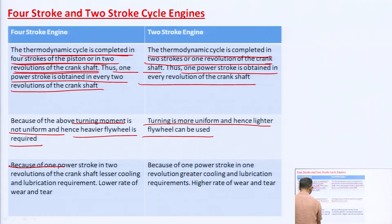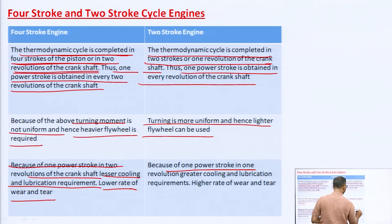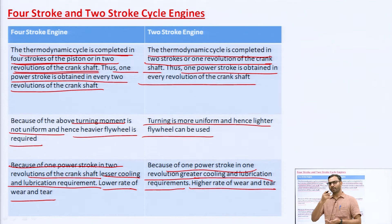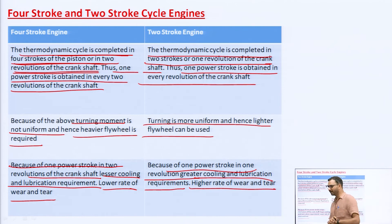Because of one power stroke in every two revolutions of the crankshaft in the four-stroke engine, there is a lesser cooling and lubrication requirement and a lower rate of wear and tear. But in the case of the two-stroke engine, one power stroke in every revolution means greater cooling and lubrication requirement and a higher rate of wear and tear.